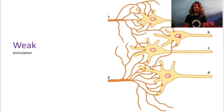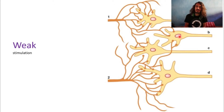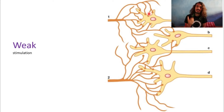Now instead of a strong stimulus, let's give a weak — or subliminal — stimulus. A subliminal or sub-minimal stimulus is one that is below the threshold needed to generate an action potential. A minimal stimulus is one just sufficient to reach threshold and generate at least one action potential. Giving something less than that will result in excitatory post-synaptic potentials (EPSPs) but not action potentials, because the threshold is not reached.